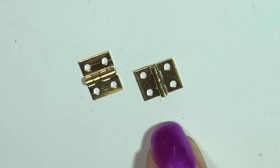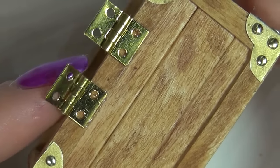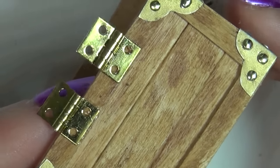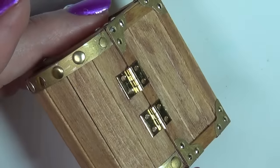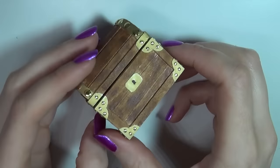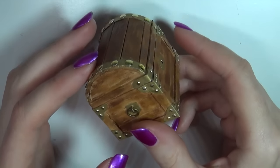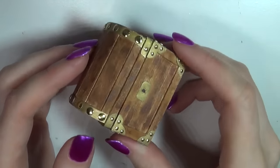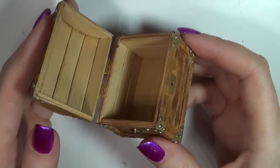Now we're going to connect the top and bottom with some hinges. These are miniature hinges I got off eBay. There you go, that's our basic chest. I went in with some more acrylic paint as I wanted it a bit darker and then I glazed it with a matte glaze.